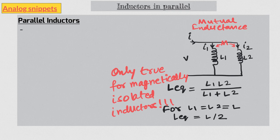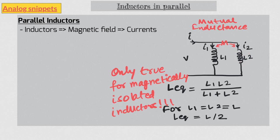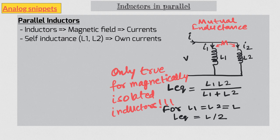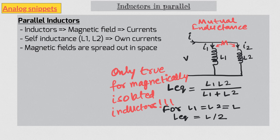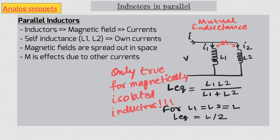We all know that inductors have something to do with magnetic fields, and magnetic fields are generated by currents. The values L1 and L2, also called self-inductance — self as opposed to mutual — are generated by their own currents. Now magnetic fields are spread out in space, as opposed to current which is contained in the physical wire. So it's quite possible to be affected by magnetic fields generated by current flowing in some other place. Mutual inductance accounts for effects due to those magnetic fields. So current flowing in L1 affects L2, and current flowing in L2 affects L1 — that is why it is called mutual inductance.